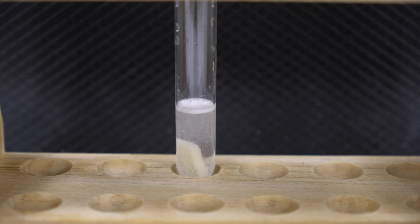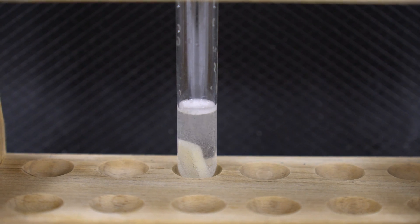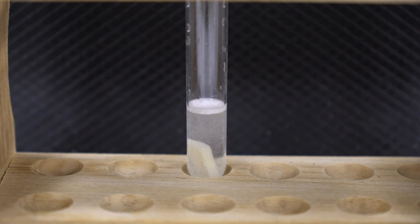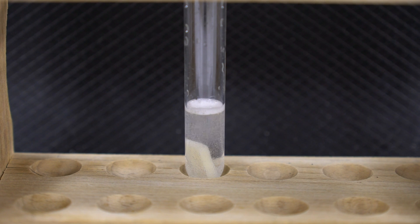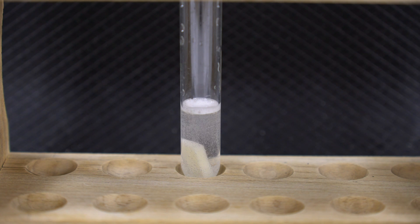Seeing that slow release there, seeing the concentration of those bubbles forming at the top. Again, this is just a regular potato and 3% hydrogen peroxide.